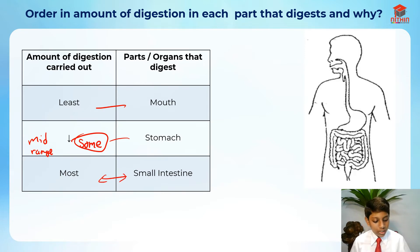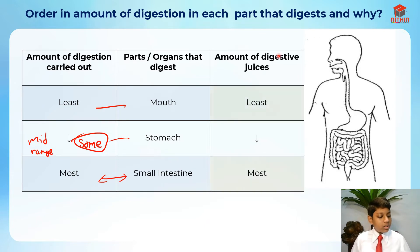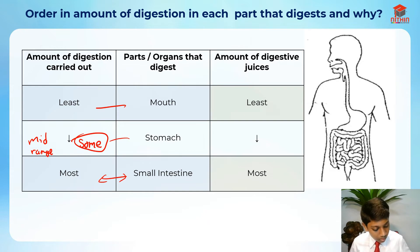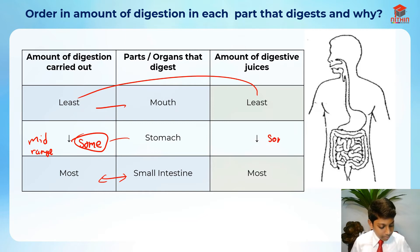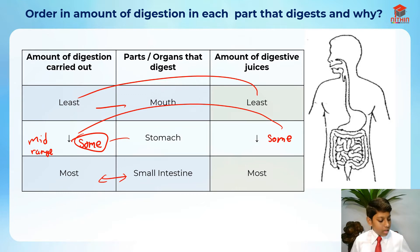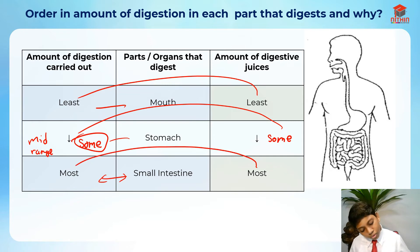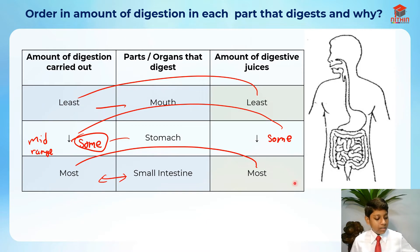You need to understand this. The reason why comes down to the amount of digestive juices. In the mouth, there's the least amount of digestive juices, which is why there's the least digestion. In the stomach, there are some digestive juices, so there's some digestion. And in the small intestine, there's the most digestive juices, so there's the most digestion.